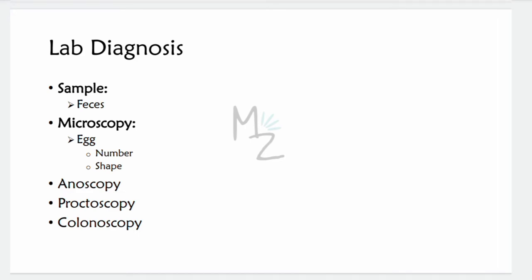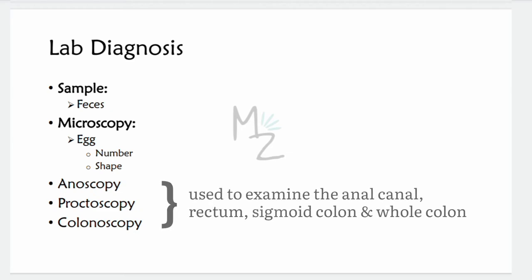For lab diagnosis, a sample of faeces is needed. Diagnosis is based on finding the typical barrel-shaped or lemon-shaped eggs with a plug at each end in the faeces under the microscope. We can also count the number of eggs. Other diagnostic techniques include anoscopy, proctoscopy, colonoscopy, or endoscopy.